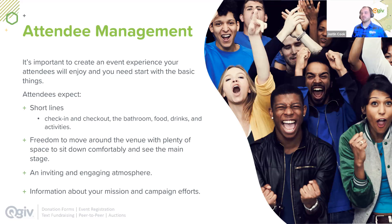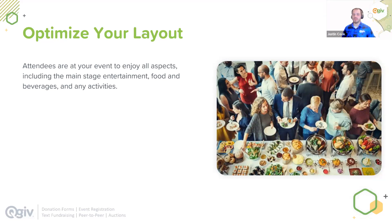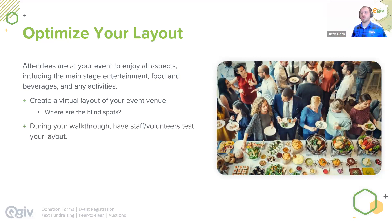Let's dive deeper into optimizing your layout. As the saying goes, no plan survives first contact — there will always be things you don't plan for. Start by creating a virtual layout of your event venue and put it to the test. Add tables and seats, food and drink stands, sponsorship banners, staff areas like check-in and check-out, and recreate any pillars or columns. In your walkthrough, look for blind spots, and have staff and volunteers test that layout. The more people involved, the easier it is to identify issues.